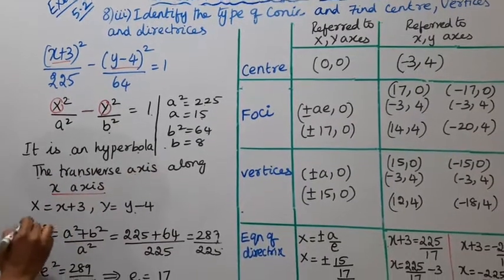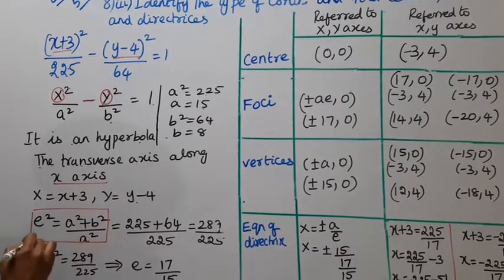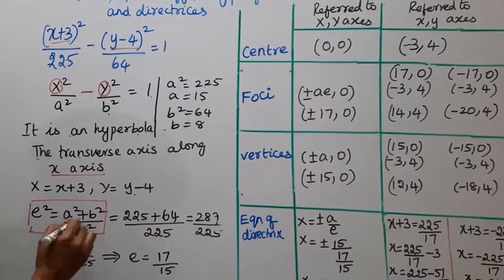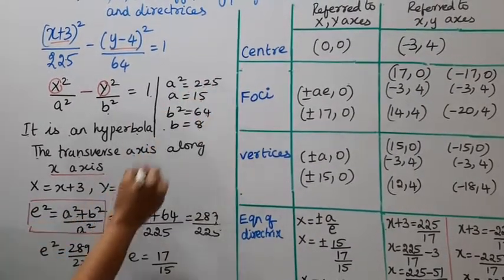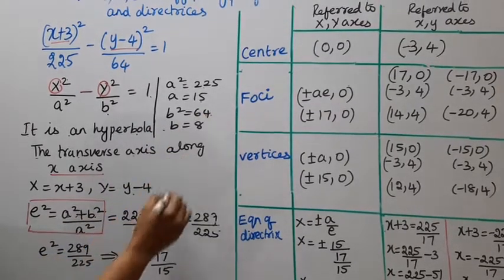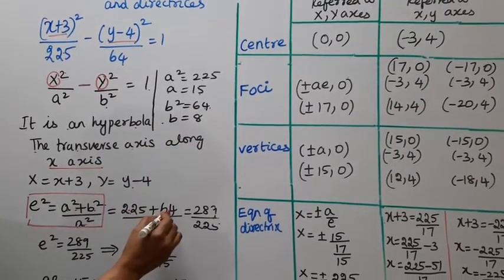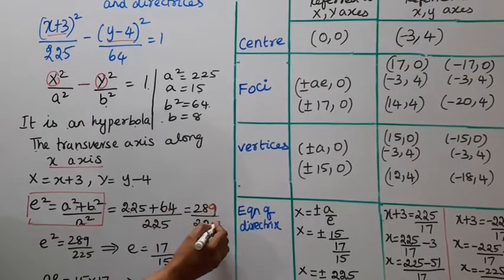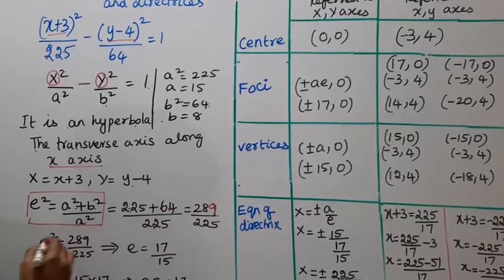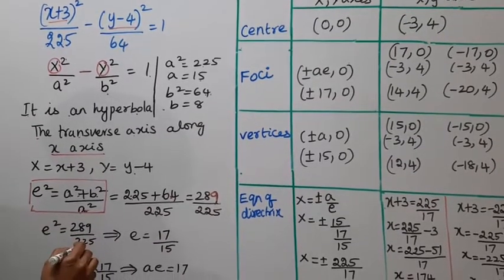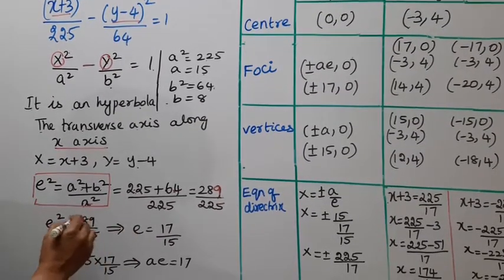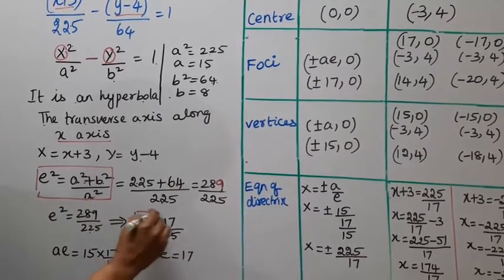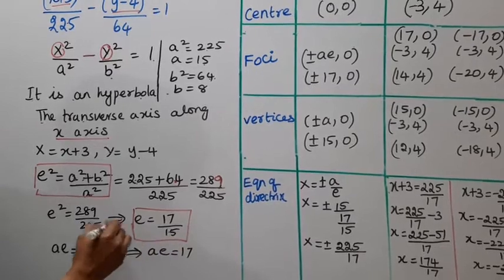For the hyperbola, the eccentricity formula is: e² = (a² + b²) / a². So e² = (225 + 64) / 225 = 289/225. Taking the square root, e = 17/15, since √289 = 17 and √225 = 15.